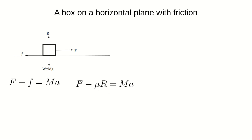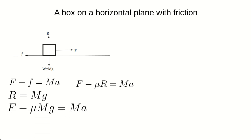Along the vertical, since there is no movement in that direction, R equals mg. Now that we know R equals mg, we substitute into F minus μR = ma to get F minus μmg = ma. Rearranging, we have F = μmg + ma, and factorizing M out gives us F = M(μg + a).